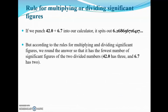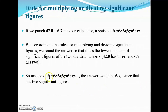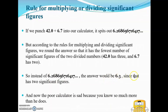So we round the answer so it has the fewest number of significant figures of the two numbers being divided. 42.0 has 3 significant figures and 6.7 has 2, so instead of 6.2686..., the answer is 6.3, since that has two significant figures — just like 6.7 does. It rounds up from 6.26 to 6.3 because the next digit is 6, which is 5 or greater. So now the poor calculator is sad because you know so much more than it does.